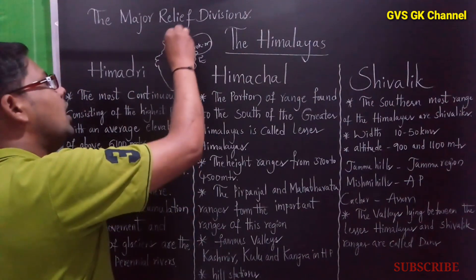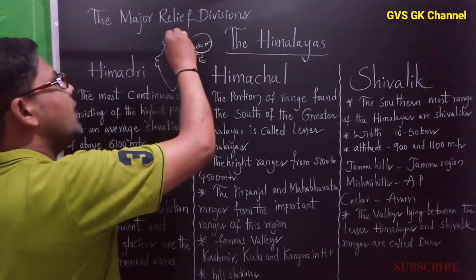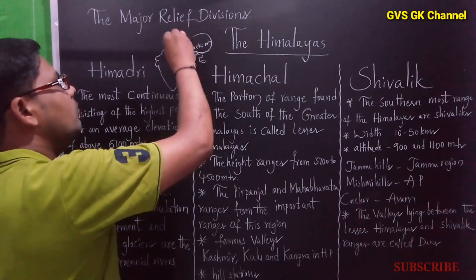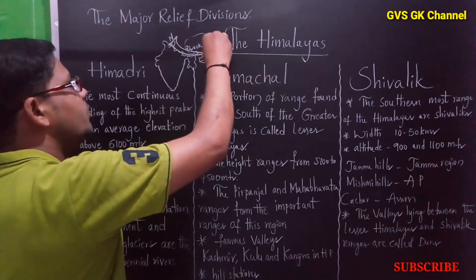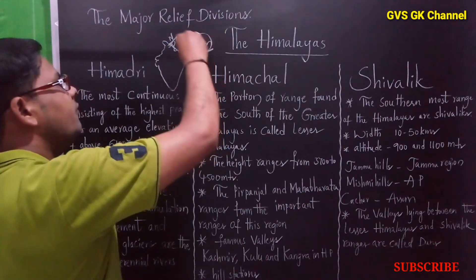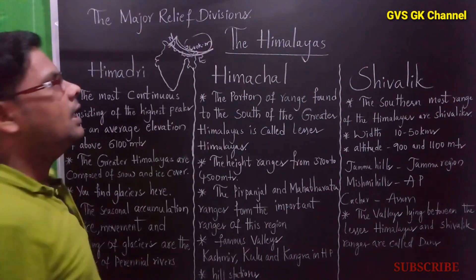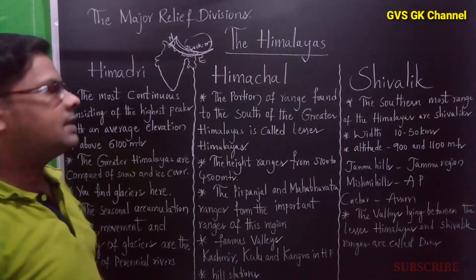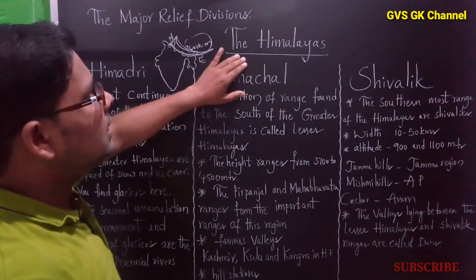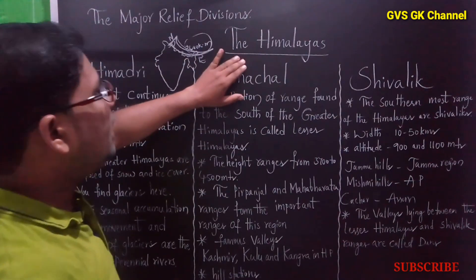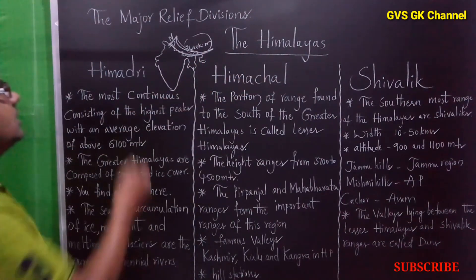These Himalayas have a hairpin bend. While moving from Jammu and Kashmir to Arunachal Pradesh, the width of the Himalayas decreases. At the same time, the Himalayas are divided into 3 parallel ranges.